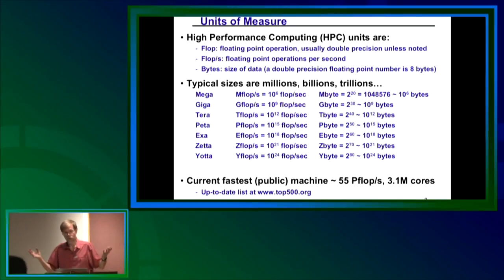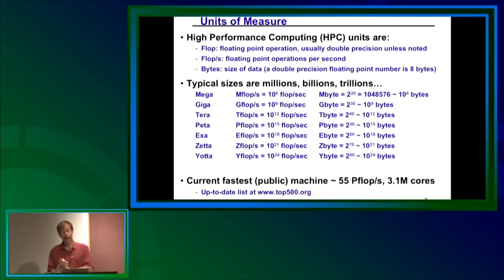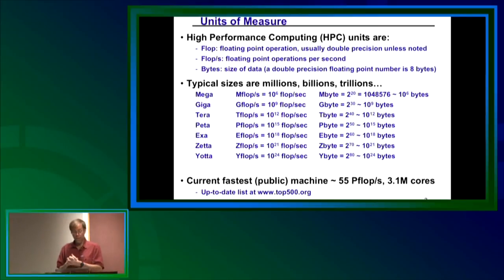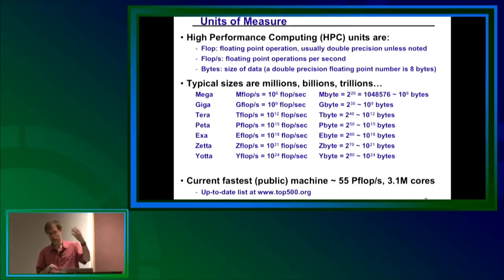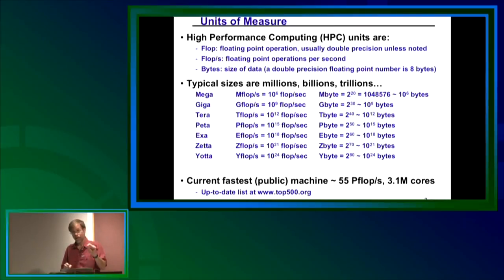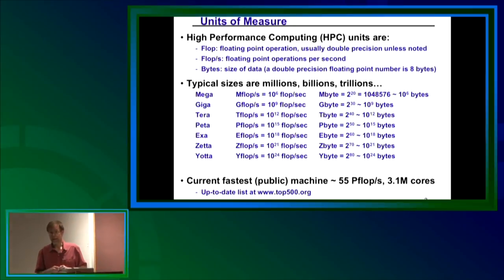Back in the Bronze Age, a fast computer might have done a megaflop and had a megabyte of memory. Today, the computer you'll use for homework is a petaflop — that's 10 to the 15th floating point operations per second. When first installed three years ago, it was the fifth largest computer in the world; it's now number 29, not because it got slower, but because people keep building new ones. The Department of Energy is proposing to build an exaflop computer — 10 to the 18th — in about three or four years.